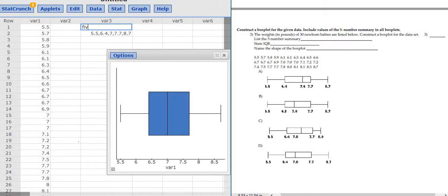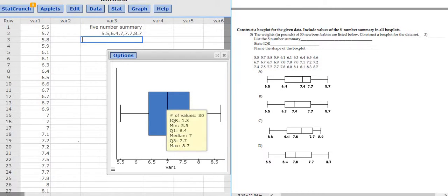So this here is the five number summary. Let me make it a little bit bigger so it's more clear. Okay, so 5.5, 6.4, 7, 7.7, 8.7. The IQR is also there, it's 1.3. IQR stands for Interquartile Range. So 1.3.